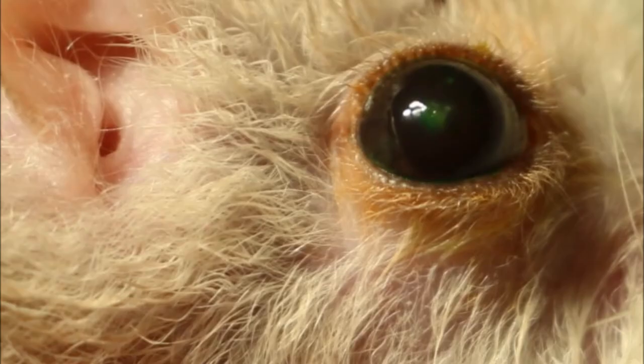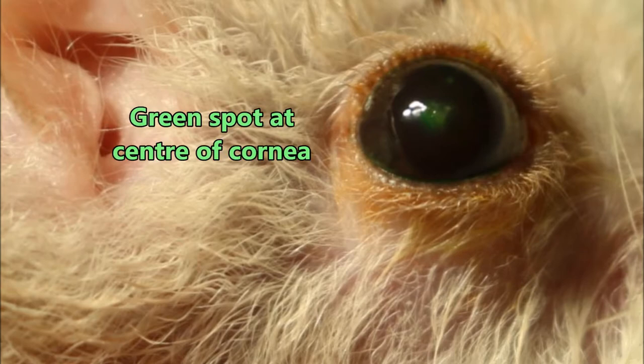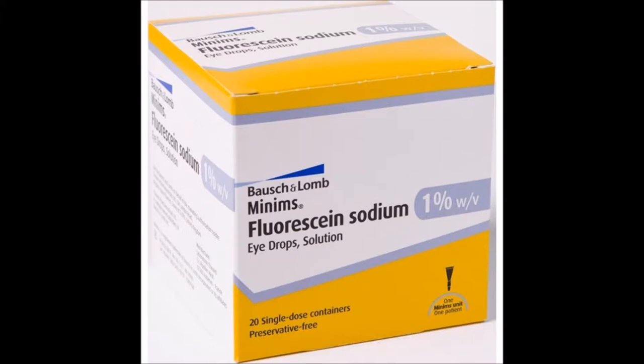This is a hamster's eye. If you look closer, you will notice a green spot on the center and this green spot is actually a corneal ulcer stained by a fluorescent stain test.